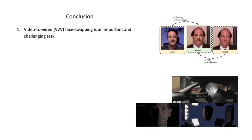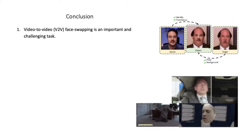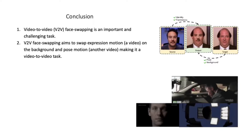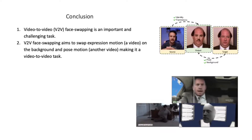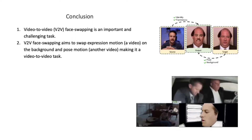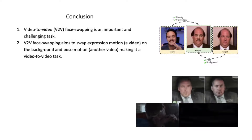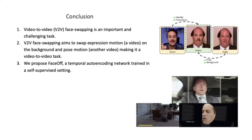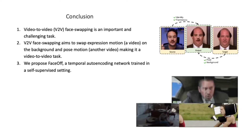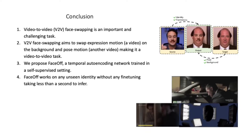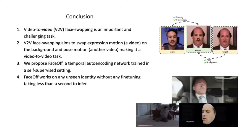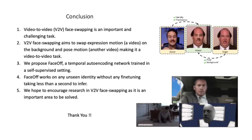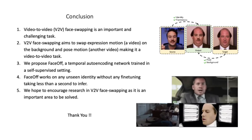V2V face swapping is an important task with many real-life use cases. Unlike face swapping, which only aims to swap an identity, V2V face swapping swaps the expressions along with the identity. We propose Face-off, a video-to-video face swapping system trained in a completely self-supervised manner that robustly tackles the challenges of motion-to-motion swapping. Face-off is a temporal auto-encoding network that works on any unseen identity directly at inference, and the swap takes just one forward pass taking less than a second to complete. Thank you for taking the time and listening to us. We hope to encourage research in the direction of V2V face swapping.